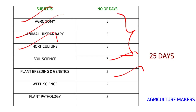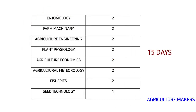Coming to weed science and plant pathology, I have allocated two days each — you have to read and revise. Coming to entomology, farm machinery, agricultural engineering, plant physiology, agricultural economics, and agricultural meteorology, I have given two days each for all these subjects. You must be thorough in all of them within those two days and must revise them too.